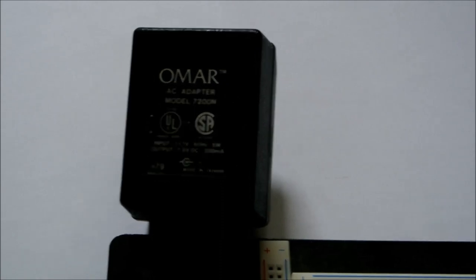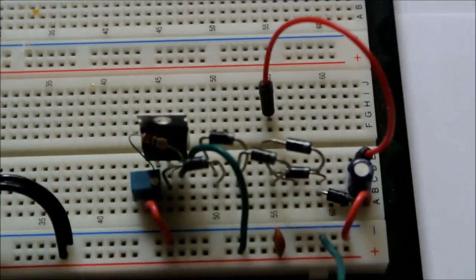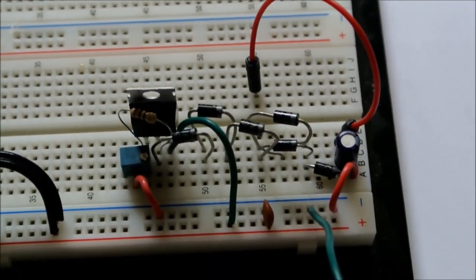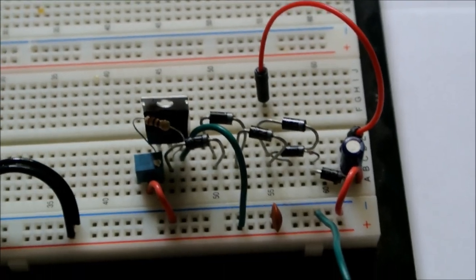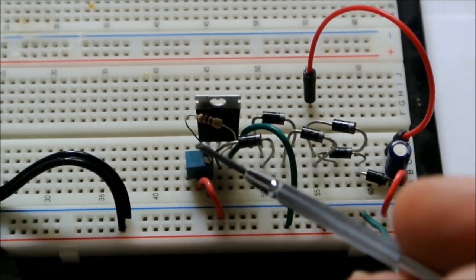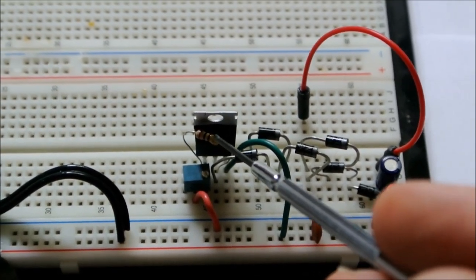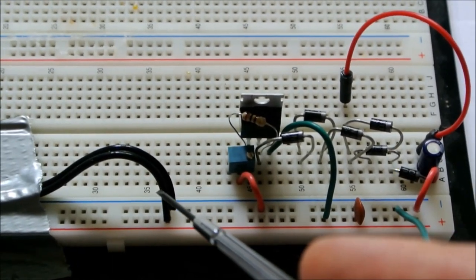For the power supply, I have this small wall wart adapter, which is then hooked up through a breadboard to this LM317 adjustable voltage regulator circuit. Basically the LM317 regulates the voltage based on the resistance of this potentiometer and this resistor combined. It's powered by the wall wart.